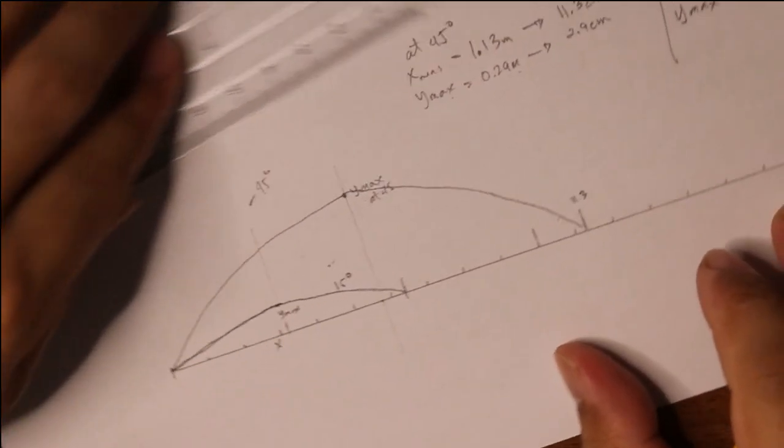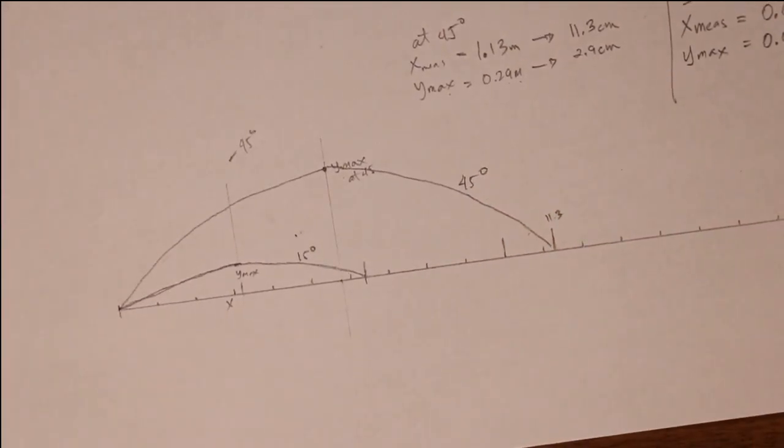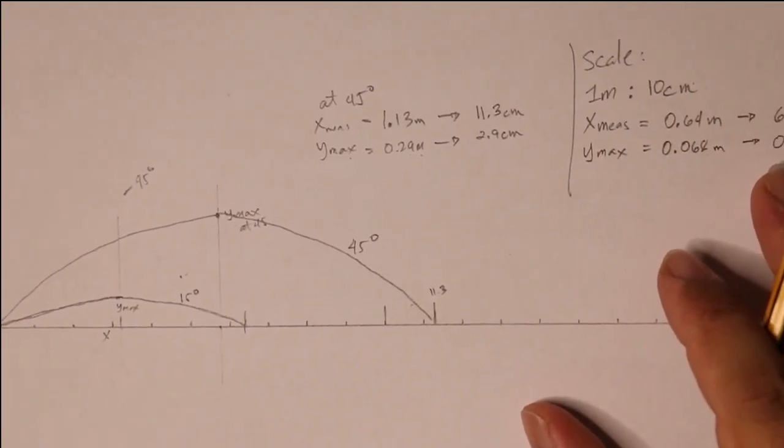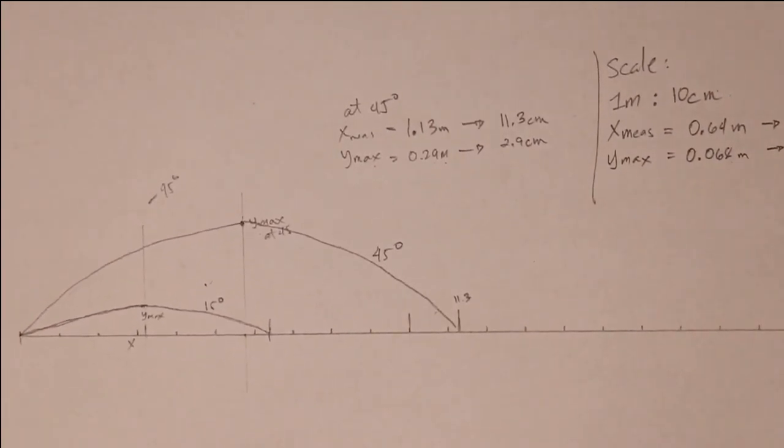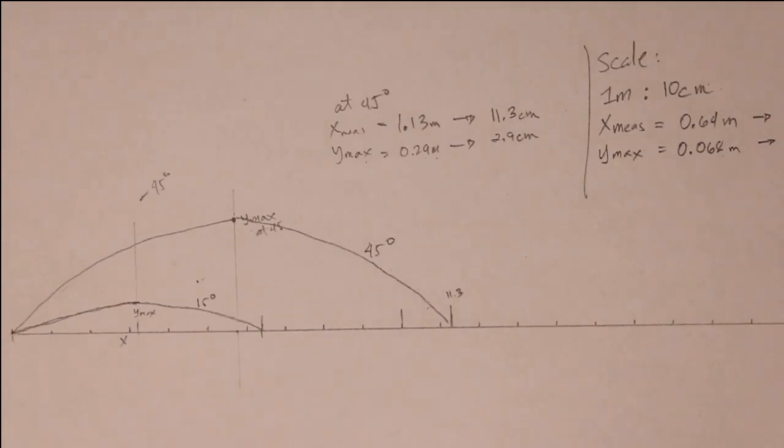This is your angle of 45 degrees, that's the trajectory. That's how you make the graph of projectile motion according to scale.